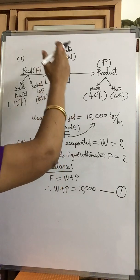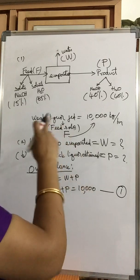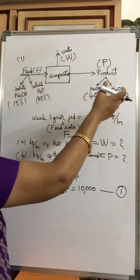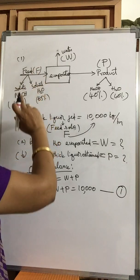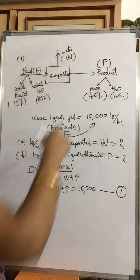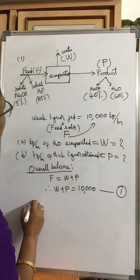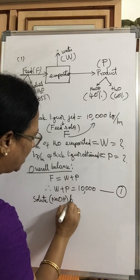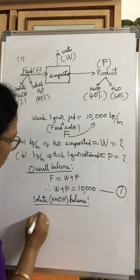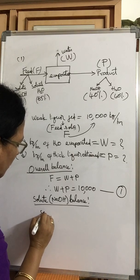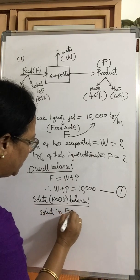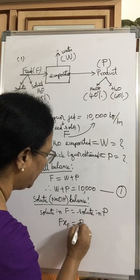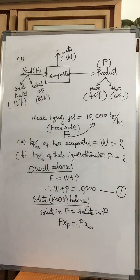We can write either a solute balance or a solvent balance. The solute balance is simpler because solute is present in only two streams: feed and product. A solvent (water) balance would require considering all three streams. So we write the solute (NaOH) balance: F·XF = P·XP. That is Equation 2.